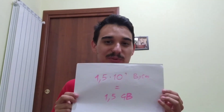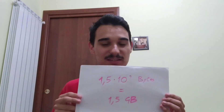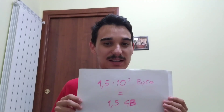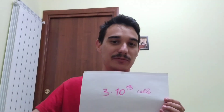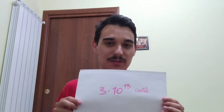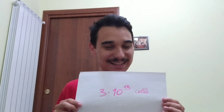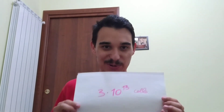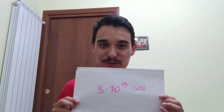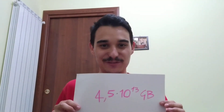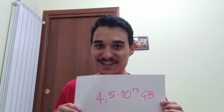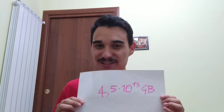That's 1.5 gigabytes in a single cell. And if you add the fact that your body is made up of roughly 3 times 10 to the 13 cells, you get to the point where, if you walk around, you carry 4.5 times 10 to the 13 gigabytes. Now let's get to it. Thank you.